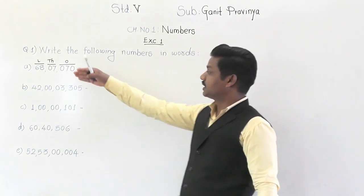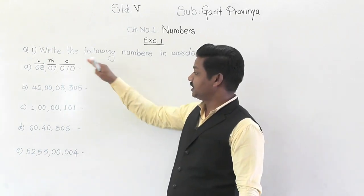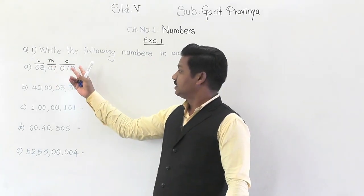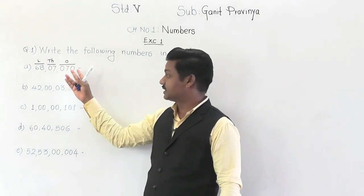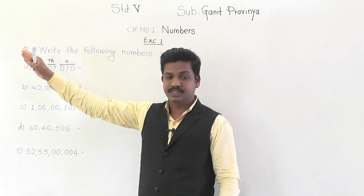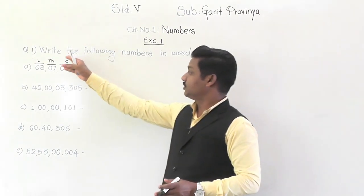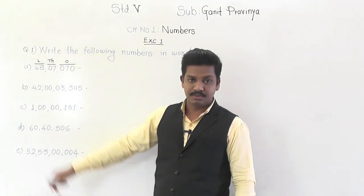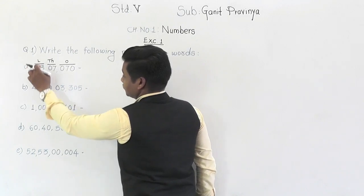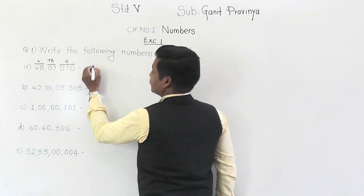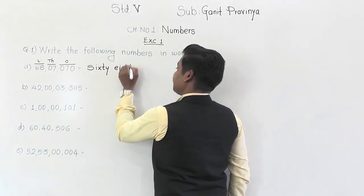When commas are not given, first we need to put commas according to the groups. From the right side, the groups are ones, thousands, lakh, and crore. In the ones group there are three places — ones, tens, hundreds — and in the thousands and remaining groups, there are two places each respectively. So we put commas, write the name of the groups above each group, and then write the number name. In the lakh group there is 68, so it is 68 lakhs.